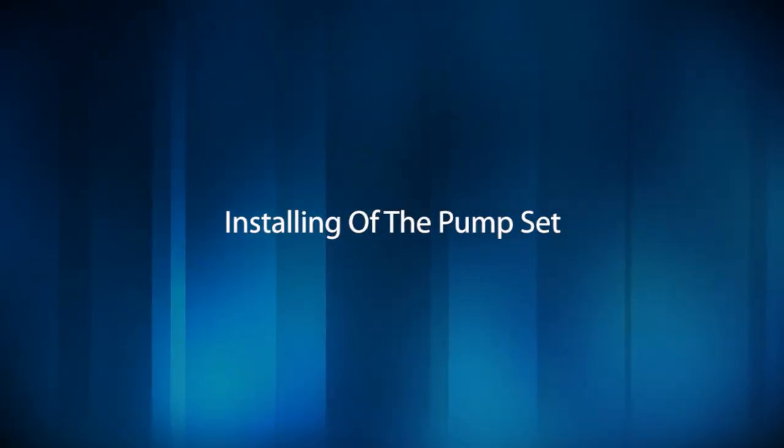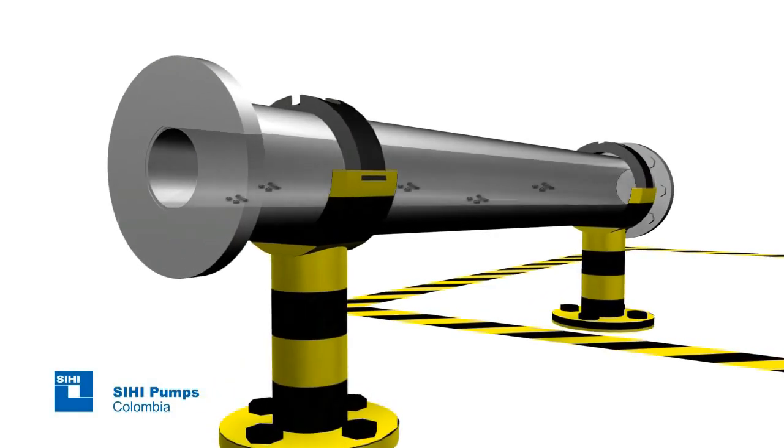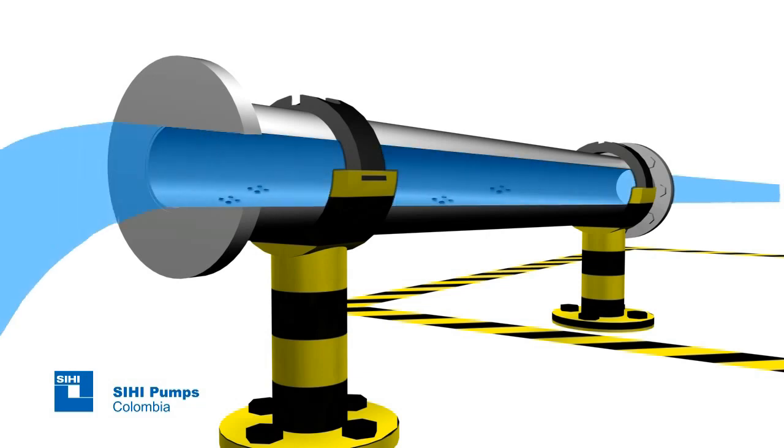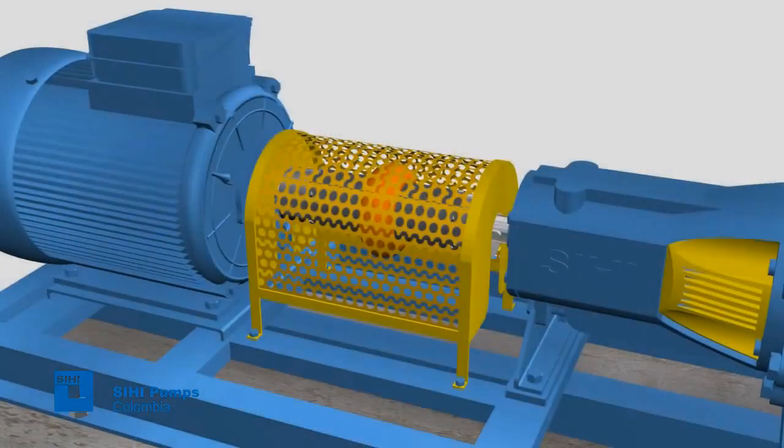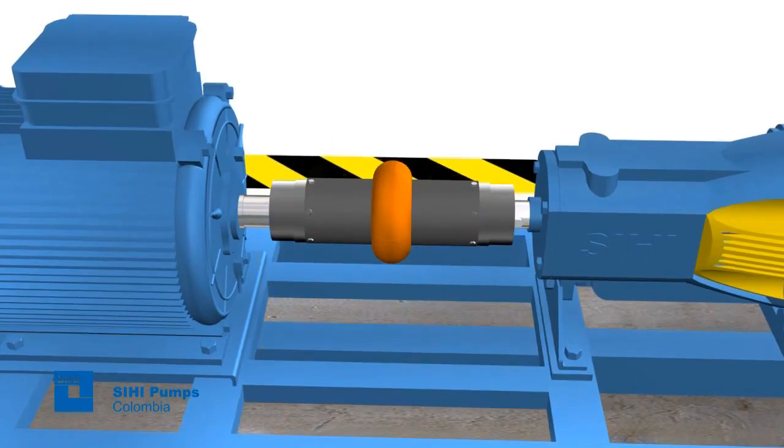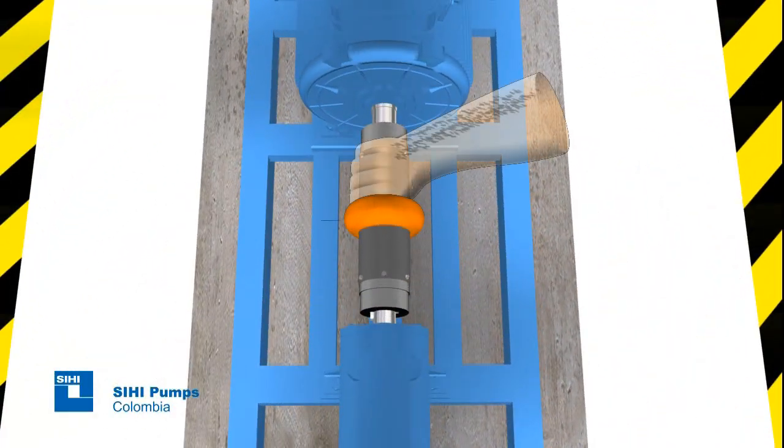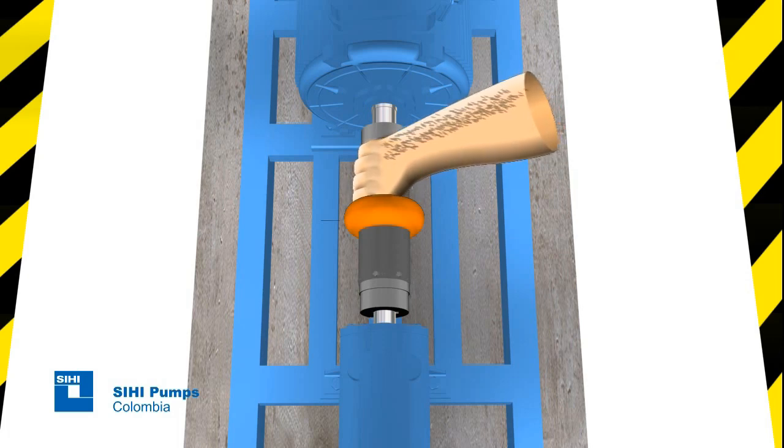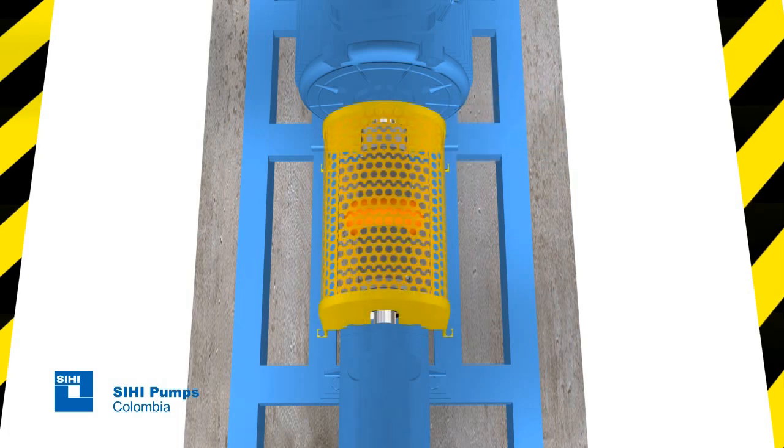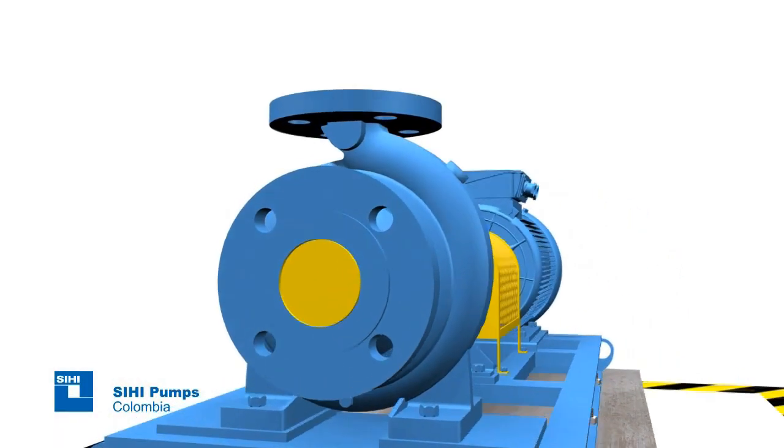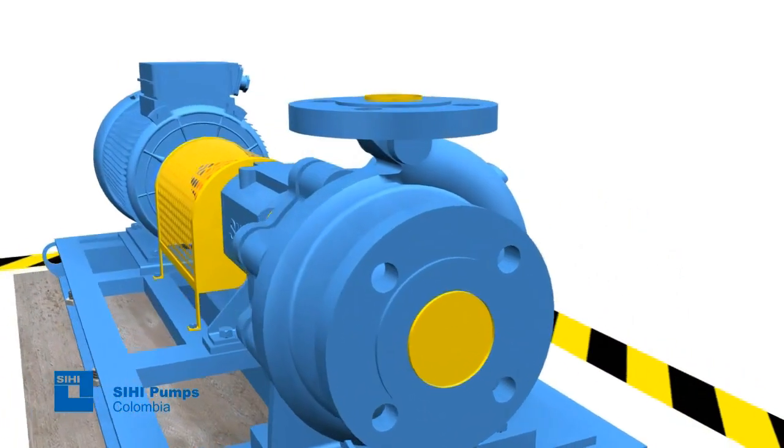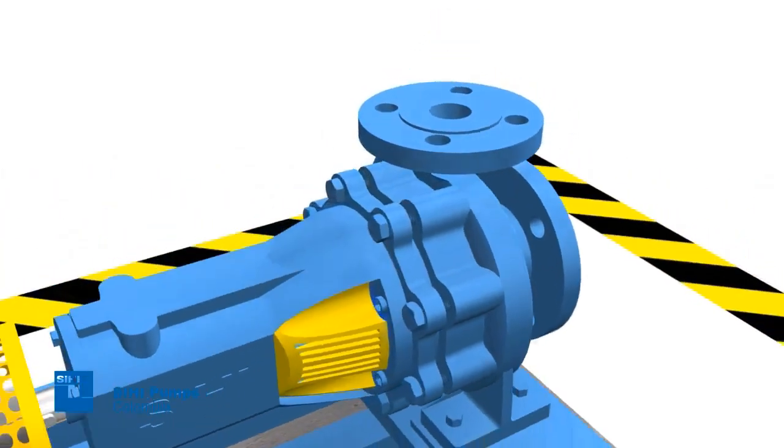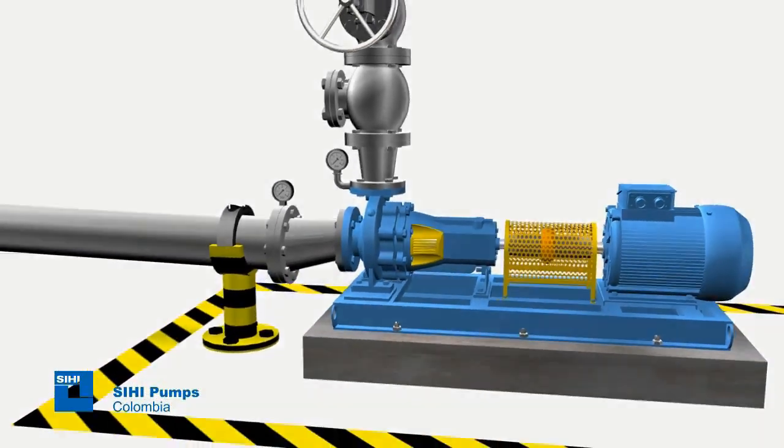Installing of the pump set. Before installing the pump set, check the cleaning of pipelines to avoid foreign elements, such as welding beads, that could pass to the pump and cause damage to it. Remove the coupling guard and rotate the shaft by hand, checking that there is no binding and all parts are free. The protection caps of the suction and discharge flange must be removed only when the pump is ready to be connected to the pipes, preventing any foreign elements from entering.